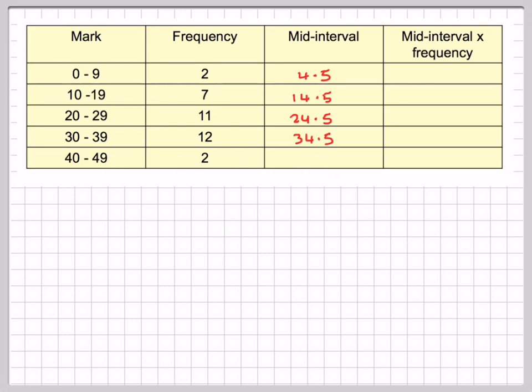The next one is 34.5, which is 30 plus 39 divided by 2. Finally, 40 plus 49 divided by 2, which is 44.5.